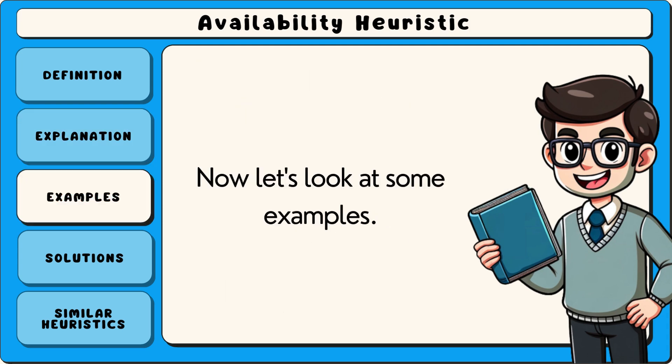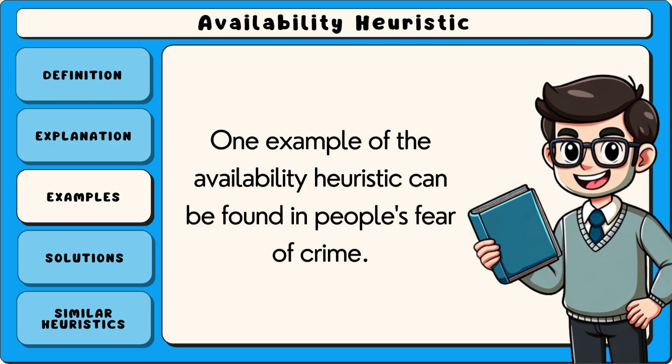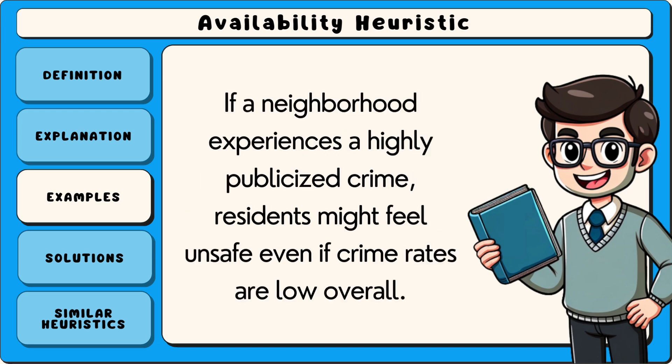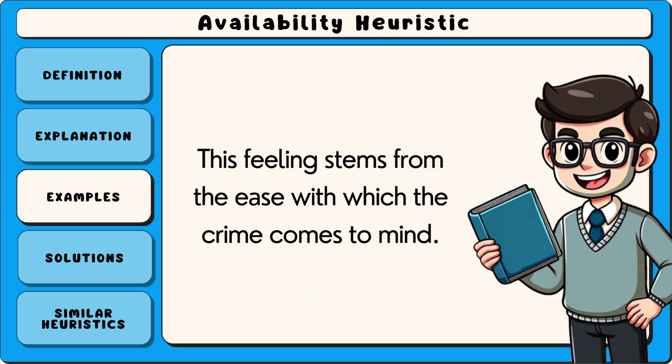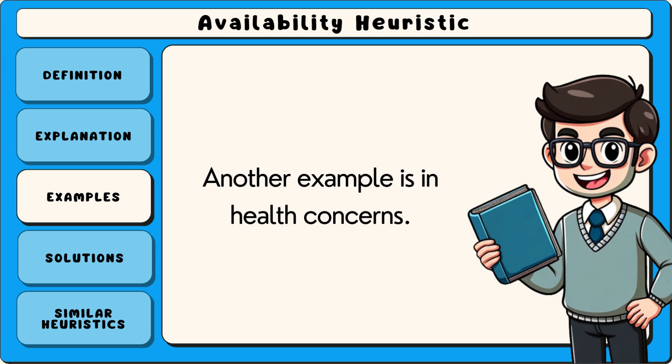Now let's look at some examples. One example of the availability heuristic can be found in people's fear of crime. If a neighbourhood experiences a highly publicised crime, residents might feel unsafe, even if crime rates are low overall. This feeling stems from the ease with which the crime comes to mind.